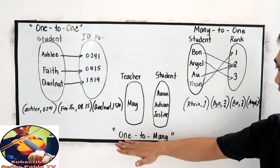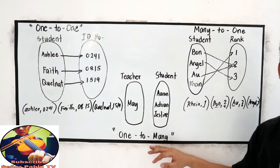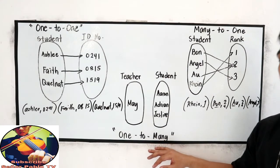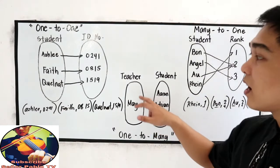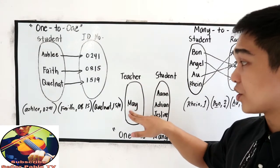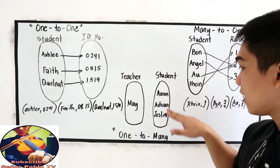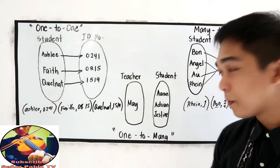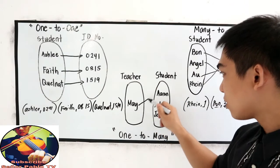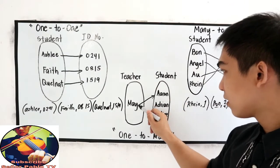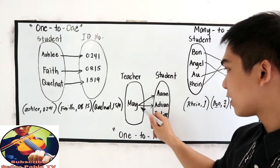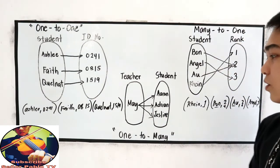And last, we have the one-to-many correspondence. Let's say we have a name of a teacher, which is Teacher May, and the following students, Aaron, Adrian, and Jess Leanne. So, for Teacher May, it goes to Aaron, goes to Adrian, and goes to Jess Leanne.